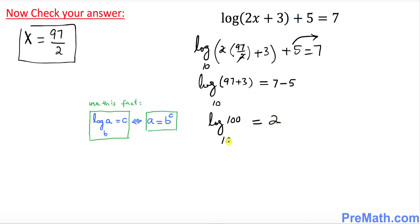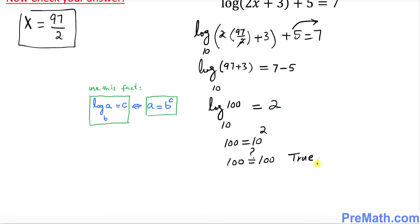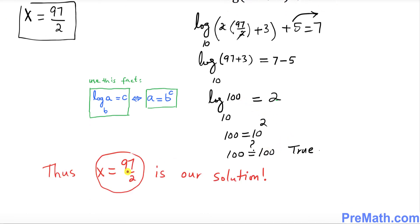Now we want to convert this logarithmic equation into exponential by using this fact. So I can write 100 equals 10 to the power of 2. 10 to the power of 2 is also 100. 10 times 10 is 100. My question is, is this statement true or false? This statement is true. So since this statement is true, x equals 97 over 2 is indeed our solution.